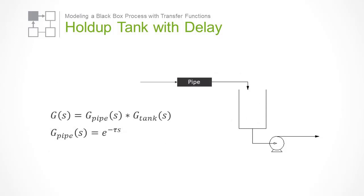The process we are modeling can actually be thought of as two processes in series, a well-mixed tank and a pipe. Since they are in series, the overall transfer function, G of S, is the product of two individual transfer functions. For the tank, we have a first-order lag, and for the pipe, we will have a delay.